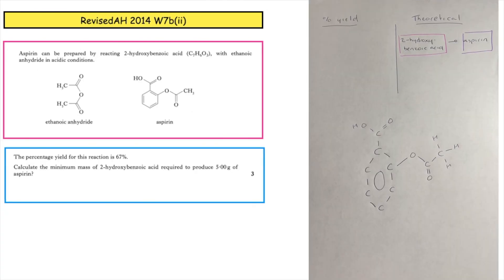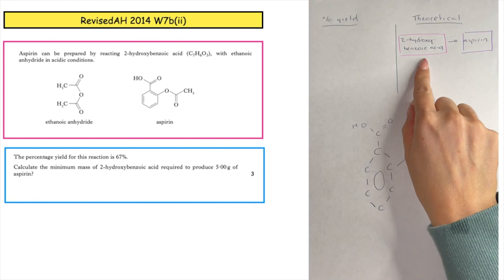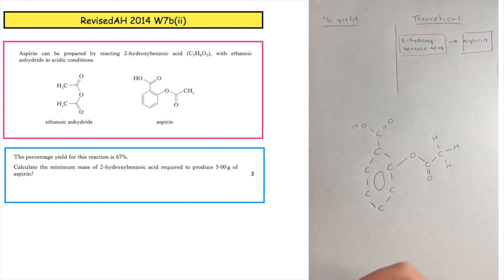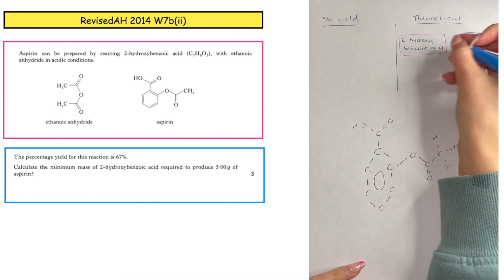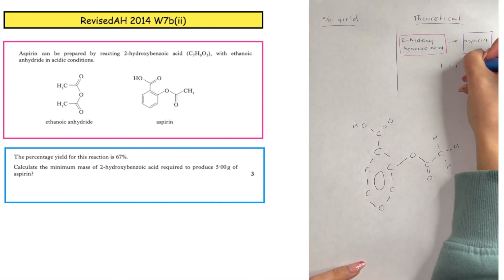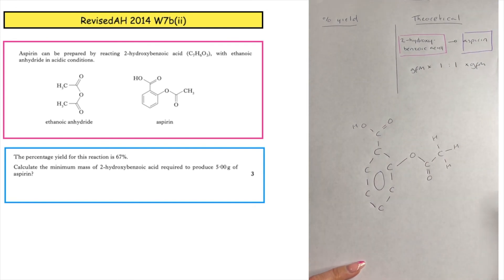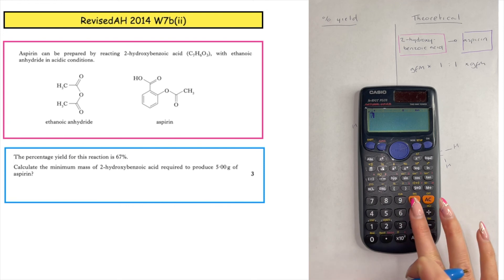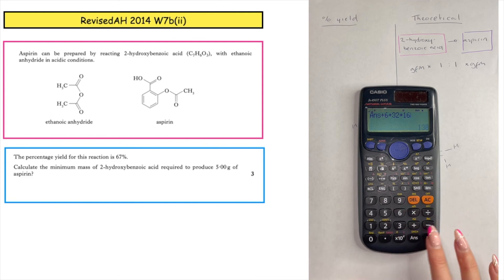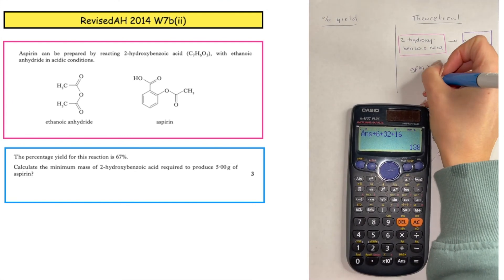This past paper question is from the Revised Advanced Higher 2014, written 7b part 2. The percentage yield for this reaction is 67%. Calculate the minimum mass of 2-hydroxybenzoic acid required to produce 5 grams of aspirin. We take down our entities, do our mole ratio — one to one — and times through by the GFM. The molecular formula for 2-hydroxybenzoic acid is given, so: 7 times 12 plus 6 plus 32 plus 16 gives a GFM of 138 grams.